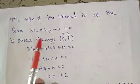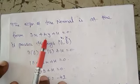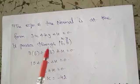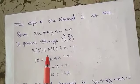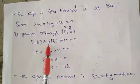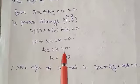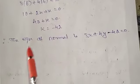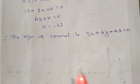Next, find the equation of the normal. The normal is perpendicular to the tangent, so it takes the form 3x plus 4y plus k equals 0. Since it passes through the point (6, 6): 3(6) plus 4(6) plus k equals 0, giving 18 plus 24 plus k equals 0, so 42 plus k equals 0, therefore k equals minus 42. The equation of the normal is 3x plus 4y minus 42 equals 0.